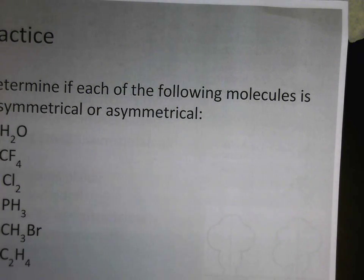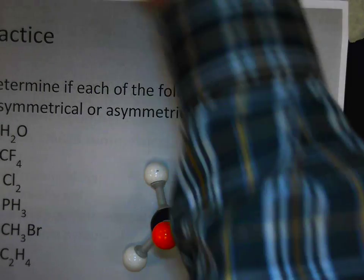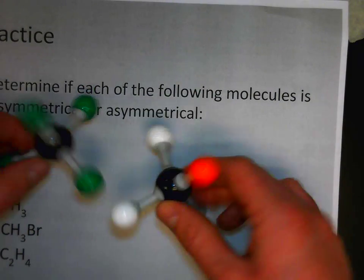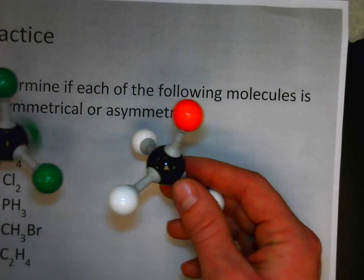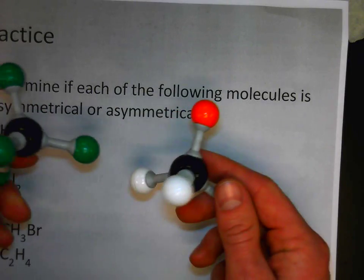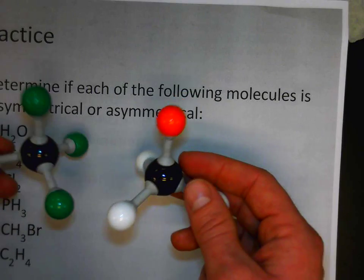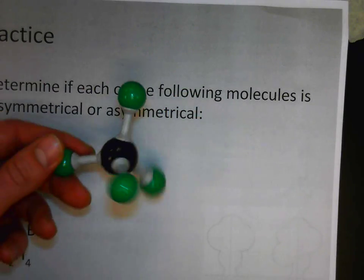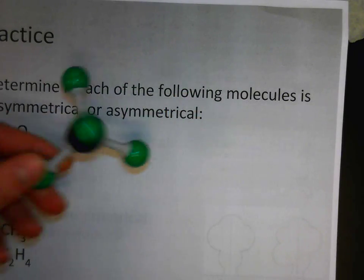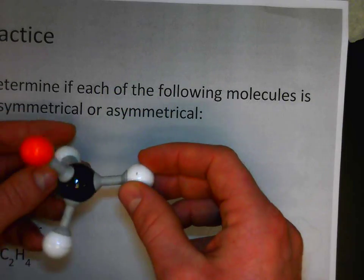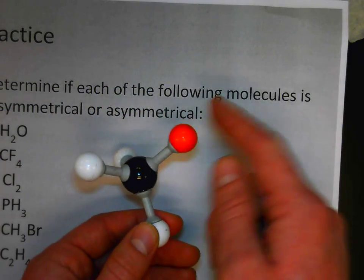CH3Br. Notice here we have a similar shape to the last one. These are both tetrahedral in their shapes, and we said that tetrahedral can sometimes be symmetrical. In this case we would consider this to be symmetrical, but in this case we wouldn't. The reason why is because something is different on one side.